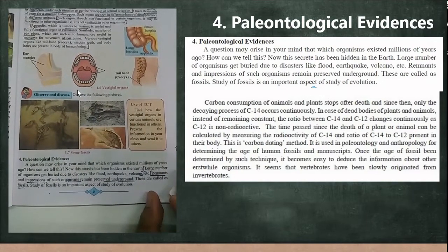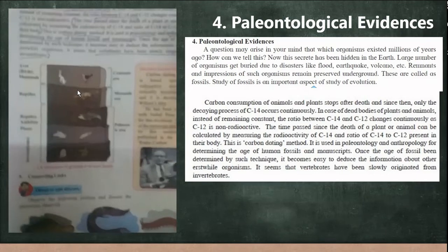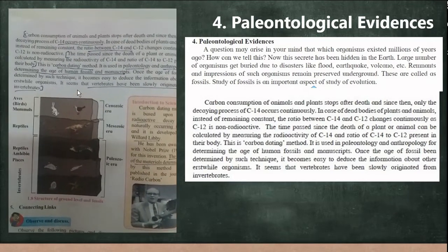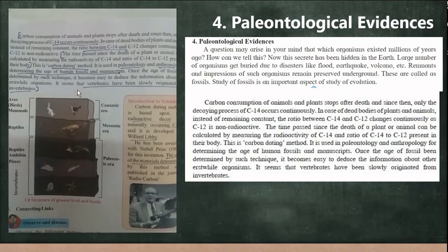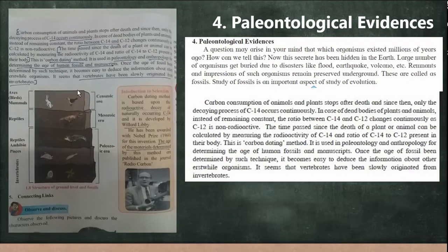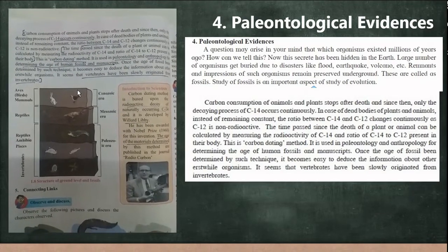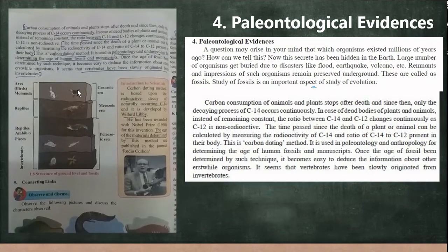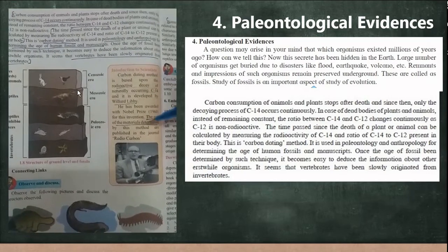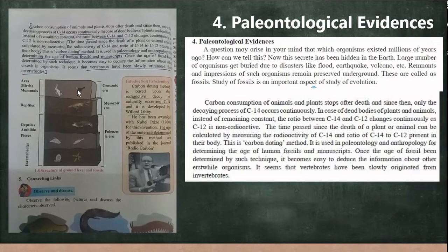The study of fossils is called paleontology, and paleontological evidence helps support the theory of evolution. An important method is carbon dating, developed by scientist Willard Libby, who was awarded the Nobel Prize in 1960 for this invention. Using carbon dating, we can calculate the age of materials — for example, determining that a banyan tree is 400 years old — using the carbon isotope C-14.